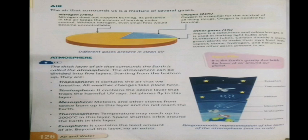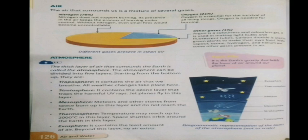The atmosphere can be divided into five different layers. Starting from the bottom up, they are: troposphere, stratosphere, mesosphere, thermosphere, and exosphere. The troposphere contains the air that we breathe, and all weather changes take place here. The stratosphere contains the ozone layer that traps harmful ultraviolet sun rays, and jet planes also fly in this layer.